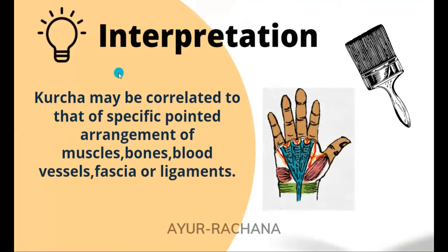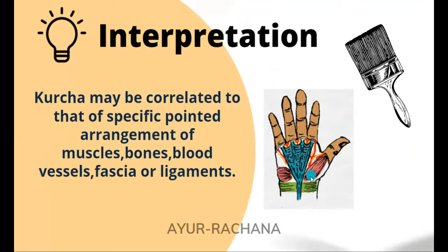Now let's look at the interpretation part. Kurcha may be correlated to specific pointed arrangements of muscles, bones, blood vessels, fascia, or ligaments. When all of them look like the bristle of a brush and converge at one point, that can be considered as a kurcha.